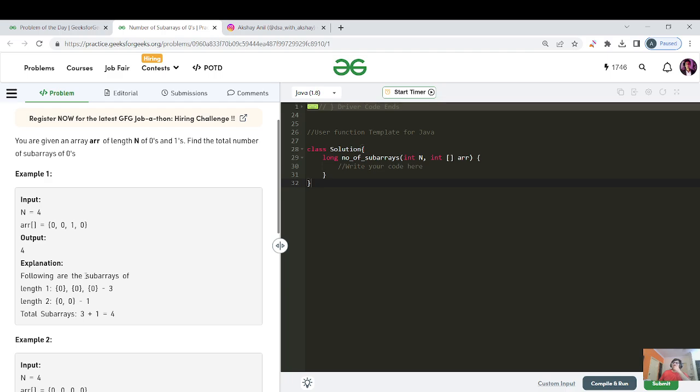For n equals to 4, the array is given as zero, zero, one, and zero, the output is 4. The explanation is given as the following are the subarrays of length one which is zero, the first zero, the second zero, and the third zero. And length two is this subarray zero zero, and you can sum this thing: 3 plus 1 equals 4.